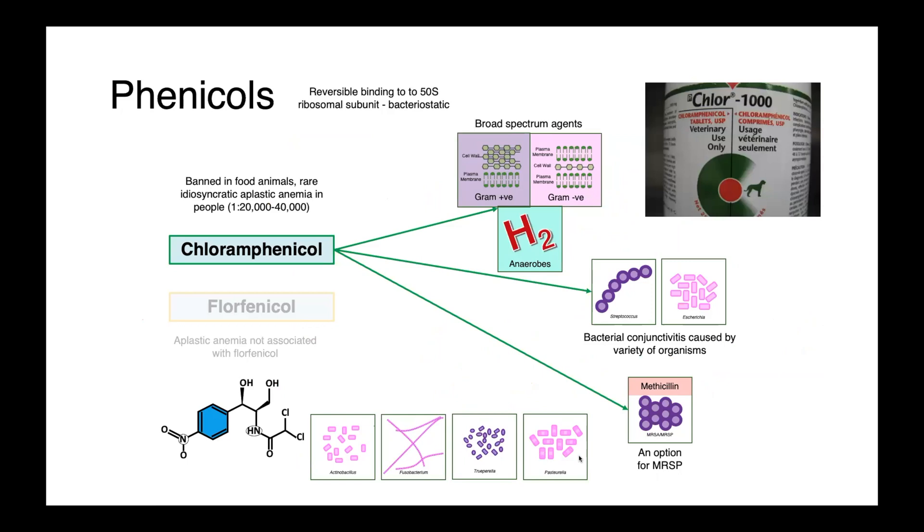Next, we have our fenicols. Like the MLSBK drugs, these act by reversibly binding to the 50S ribosomal subunit and are bacteriostatic. They are very broad spectrum agents, good activity against gram-positives, gram-negatives, and anaerobes. And chloramphenicol is probably most commonly used for treating conjunctivitis because of its broad spectrum of activity and the broad spectrum of agents that are associated with these infections. It's also a good option for treating methicillin-resistant Staphylococcus intermedius in our companion animals.